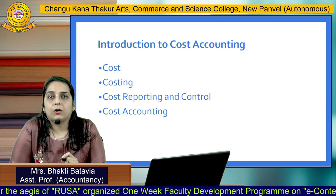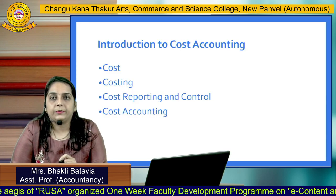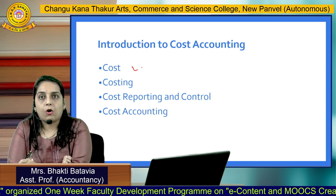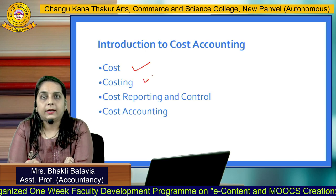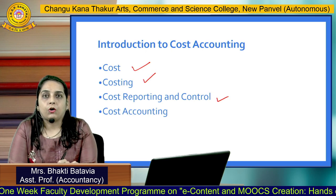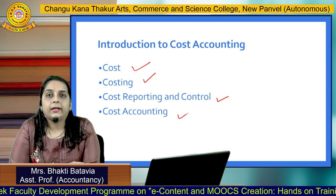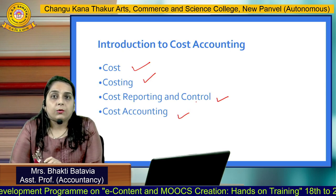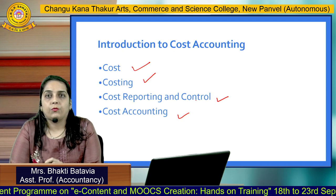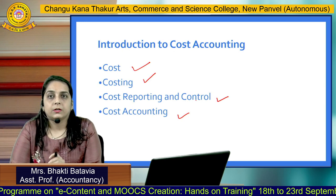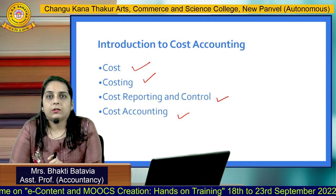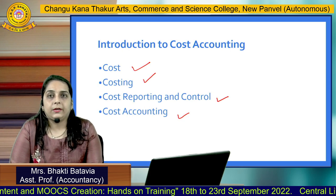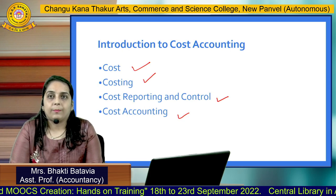For learning the Cost Accounting subject, you should understand four elements: Cost, Costing, Cost Reporting and Control, and then Cost Accounting. Before going to Cost Accounting, you should know what is Cost, what is Costing, and what is Cost Reporting and Control. So let's see one by one, starting with what is meant by Cost.